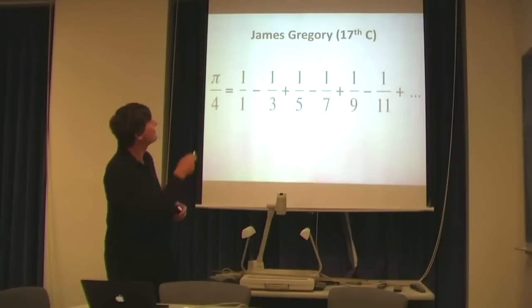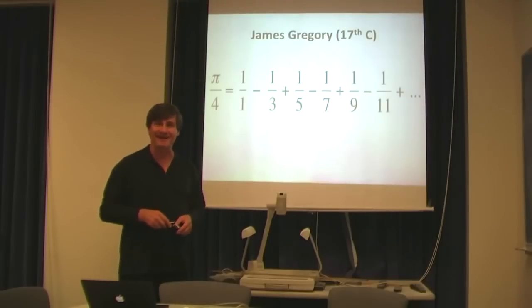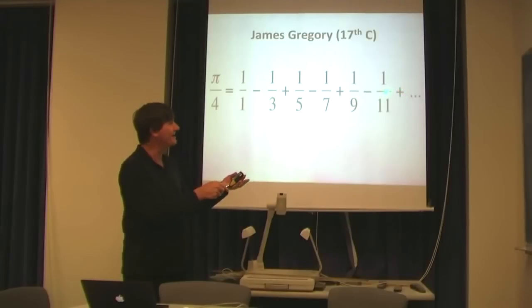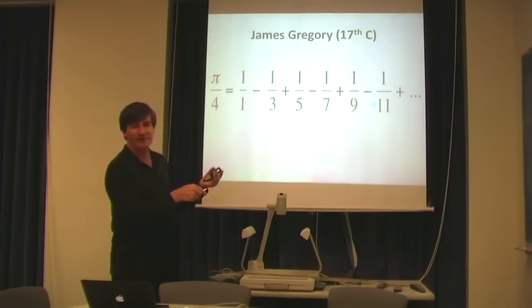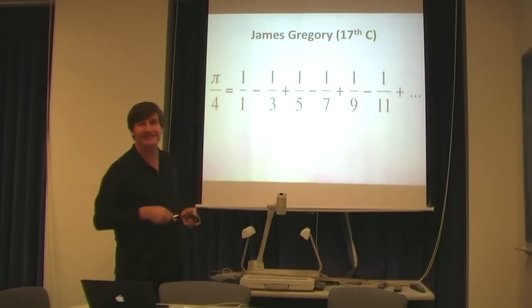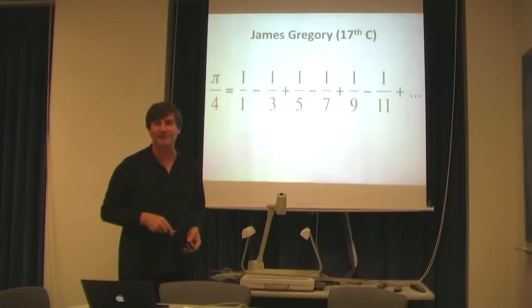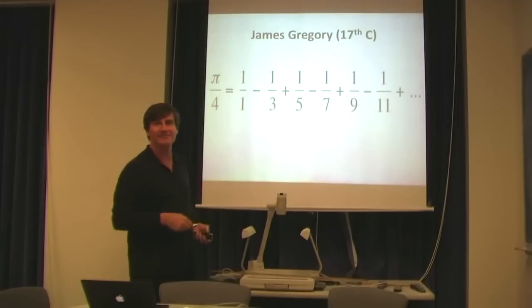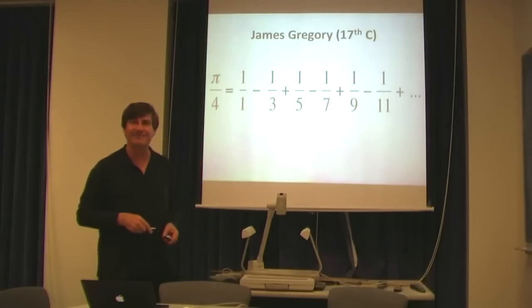Also in the 17th century, James Gregory figured out that π/4 is actually 1 - 1/3 + 1/5 - 1/7 + 1/9 - 1/11 and so on. That is, you take the reciprocals of the odd numbers and string them along with alternating signs like this. And eventually, this gives you π/4. This is, again, surprising and beautiful. Wonderful that such an arithmetic thing of such simplicity gives you a quantity related to pi.